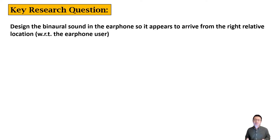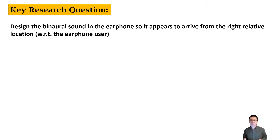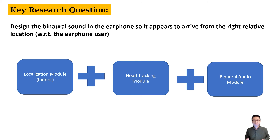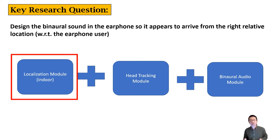To build such a system, the key research question is to design binaural sound in the earphone so that it appears to arrive from the right relative location with respect to the earphone user. To achieve this goal, we need to focus on three parts: localization, head tracking, and binaural audio. Let's first look at the localization module.